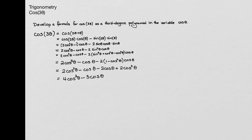I added together the 2 cosine cubed theta and the 2 cosine cubed theta — that's 4 cosine cubed theta — and minus cosine theta and minus 2 cosine theta gives me minus 3 cosine theta. So now we have a third degree polynomial, with only the variable cosine theta, and I'm done.